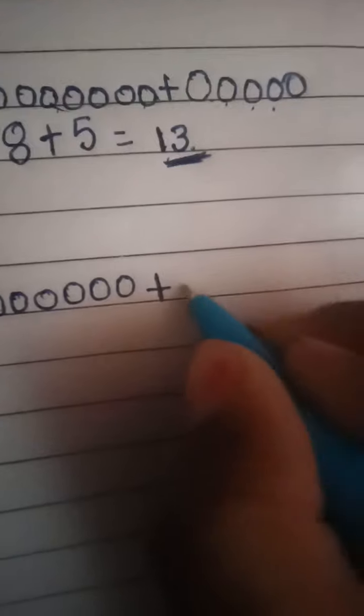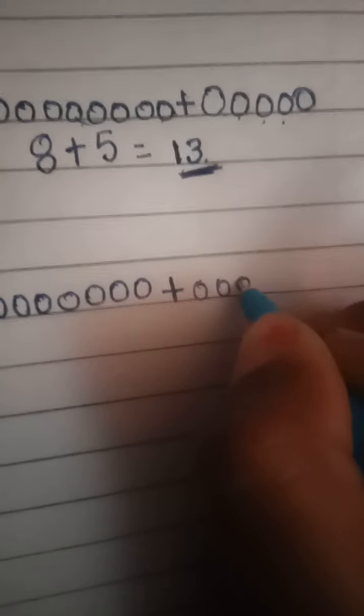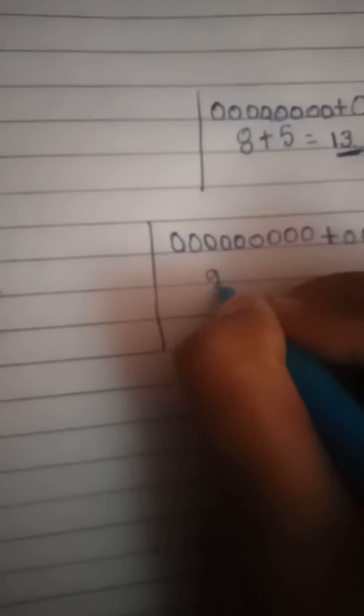Nine plus eight. We are writing now one two three four five six seven eight nine, one two three four five six seven eight nine plus eight, one two three four five six seven eight nine plus eight.